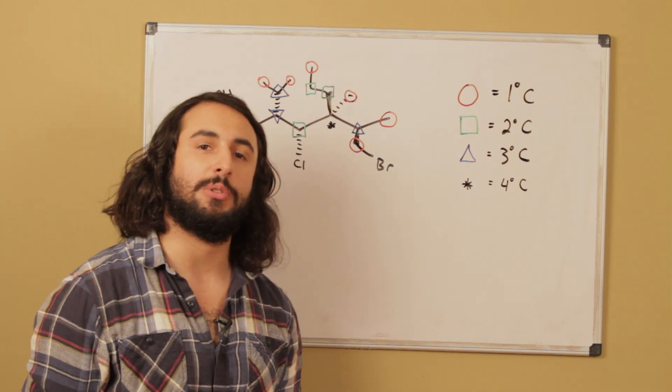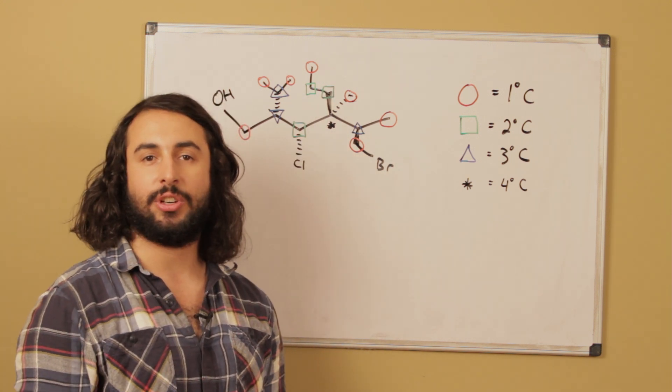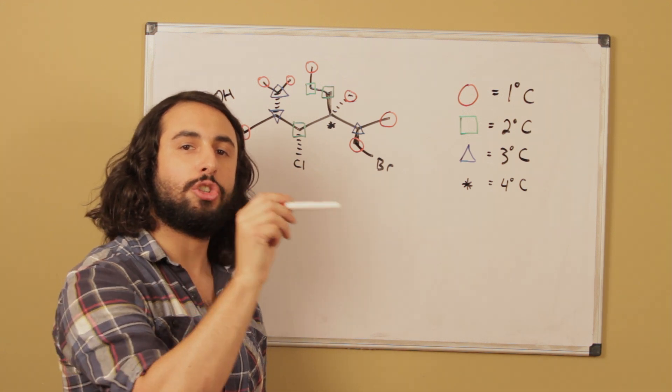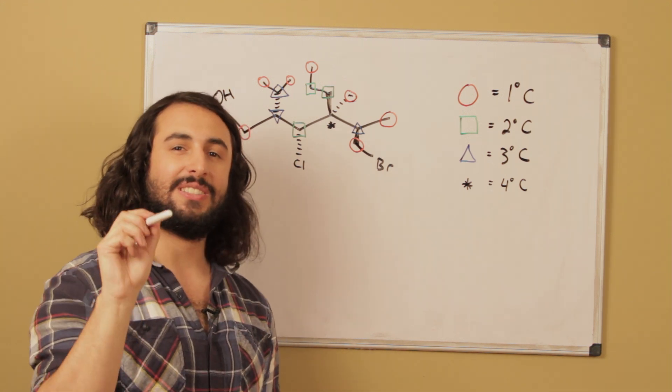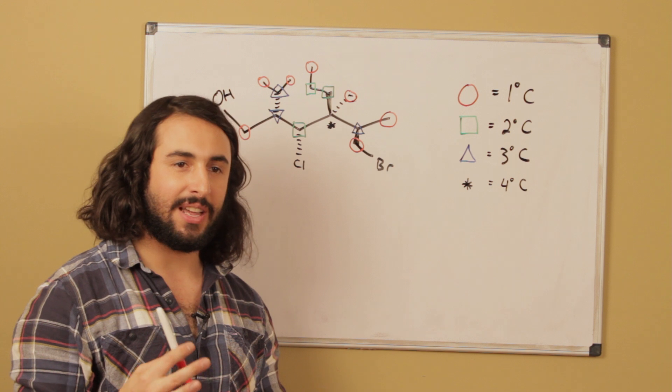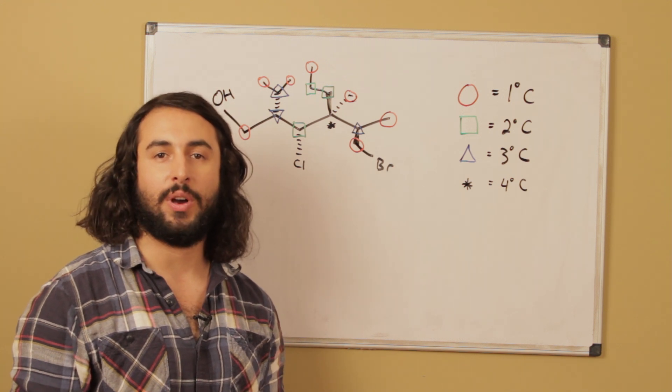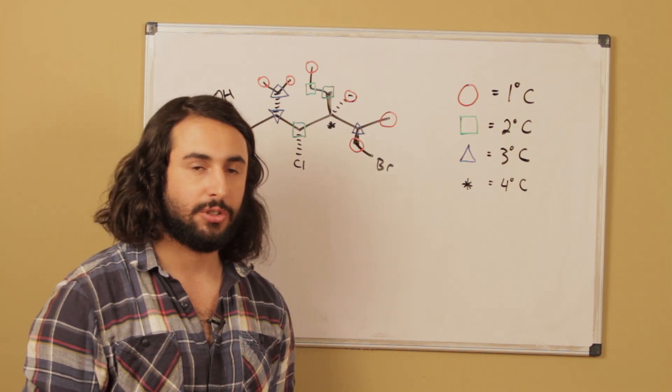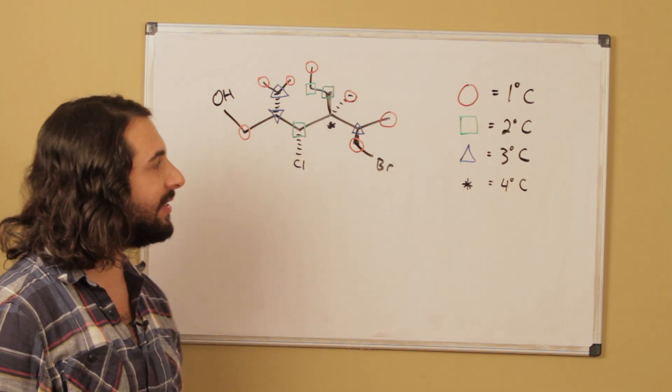So this is very important to be able to do because when we look at a reaction we need to be able to say this is a tertiary haloalkane or this is a secondary alcohol, because that is going to give us some information about what it's going to be able to do in a reaction. So ideally we're able to label it just this way.